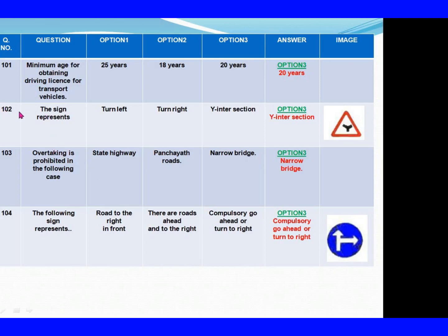Question 102: The sign represents. Option 1: Turn left. Option 2: Turn right. Option 3: Y intersection. Question 103: Overtaking is prohibited in the following case. Option 1: State highway. Option 2: Four-lane roads. Option 3: Narrow bridge. The right answer is Option 3: Narrow bridge.